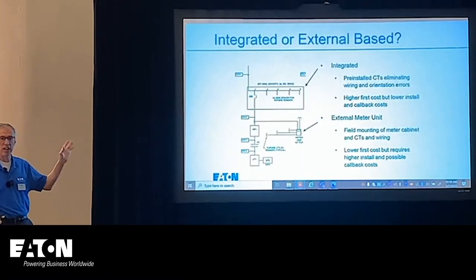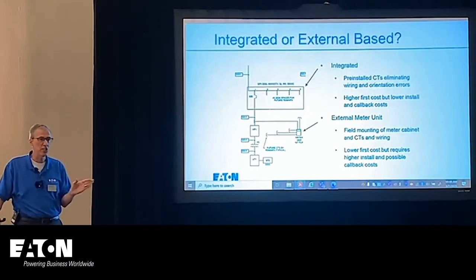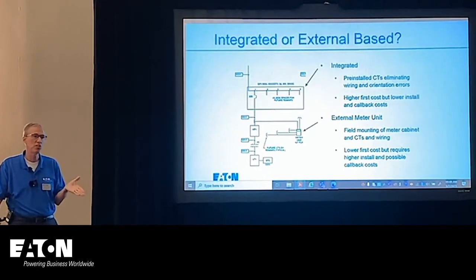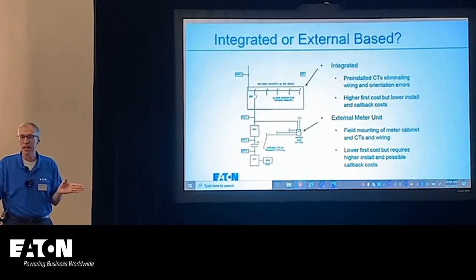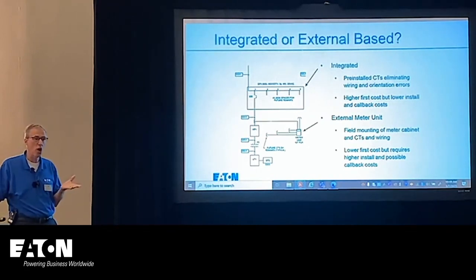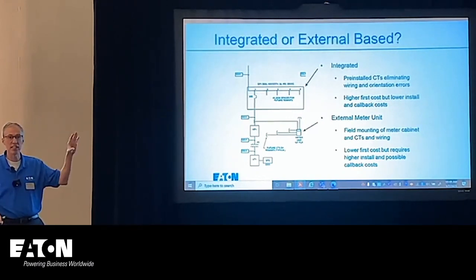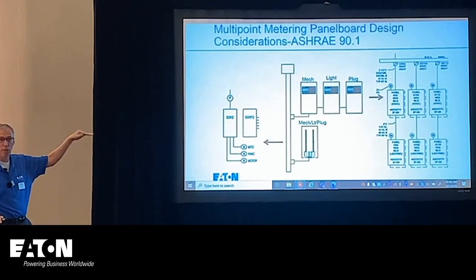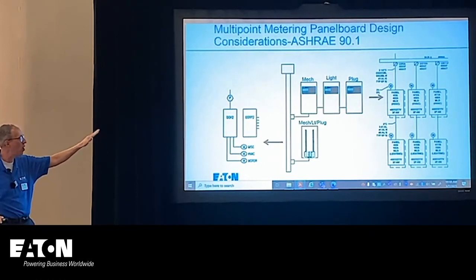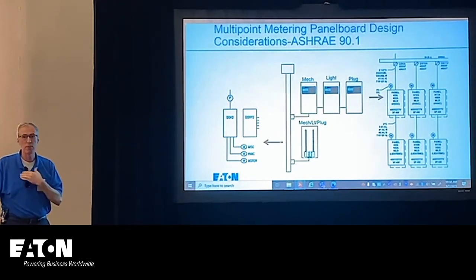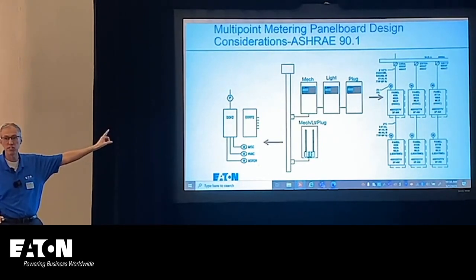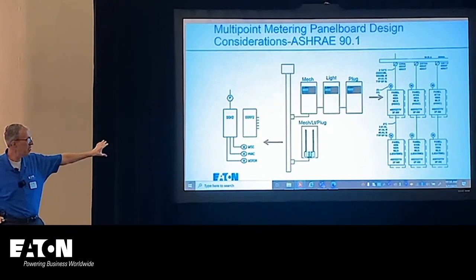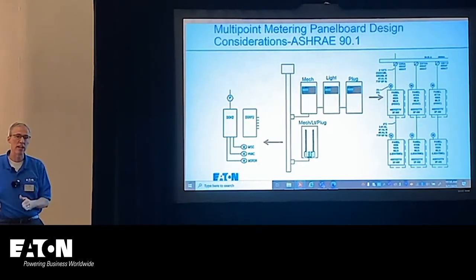When deciding between integral or external installation: integral (factory-installed) reduces callbacks but is more expensive due to additional factory labor. External (meter in a box next to gear with current sensors run over) has lower first costs. From a design perspective, you can designate an individual panel as all-mechanical, all-lighting, or all-plug loads and specify a single pre-installed meter for that panel. Or if a panel has mixed load types — a branch circuit monitor — you use the device's software to separate the individual load categories.